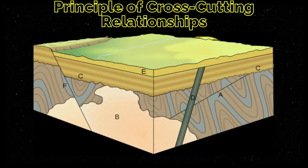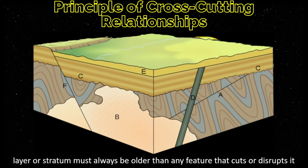Next, we have the principle of cross-cutting relationship. This principle states that a layer or stratum must always be older than any feature that cuts or disrupts it. For example, if a layer is cut by a fault, the layer is older than the fault that cuts across it.